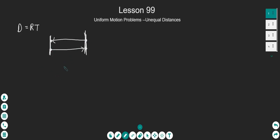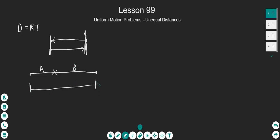We also dealt with problems where we had a certain distance for the first person, ship, plane — call it A. And then we had a second distance, which was either longer or shorter for distance B. Their combined distance was some number, maybe 300 miles.